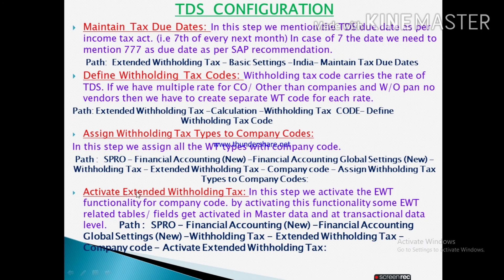The next step is to activate extended withholding tax. This is used to activate the extended withholding tax type fields on your vendor master data. When you post a transaction or create master data, the fields will be activated once you enable this. In this step we activate the withholding tax functionality for a company code. By activating this, some extended withholding tax related tables get activated at master data and transactional data levels.